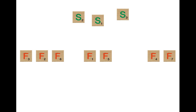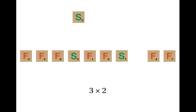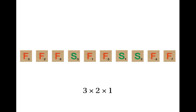Well, there are three S tiles, so for the first tile that we put back in, there are three possibilities. For the next tile, there are only two possibilities, which gives us a total of three times two possibilities so far. There's obviously only one possibility for the last tile, so the total number of possibilities for taking out the S's and rearranging them is three times two times one.